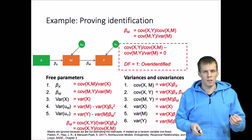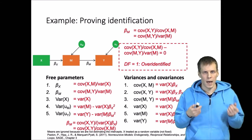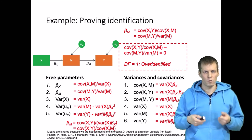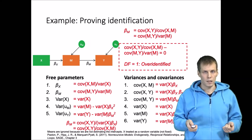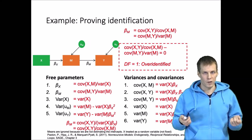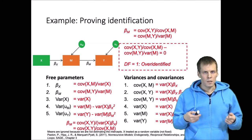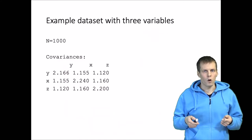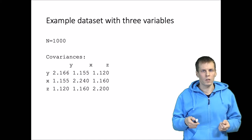If it's a lot greater than zero then we conclude that it can't be attributed to chance only, and the model should be rejected — it's not an adequate representation of our data. In practice we use the chi-square test. Let's go through five examples on model testing to understand how they work and what they tell us.